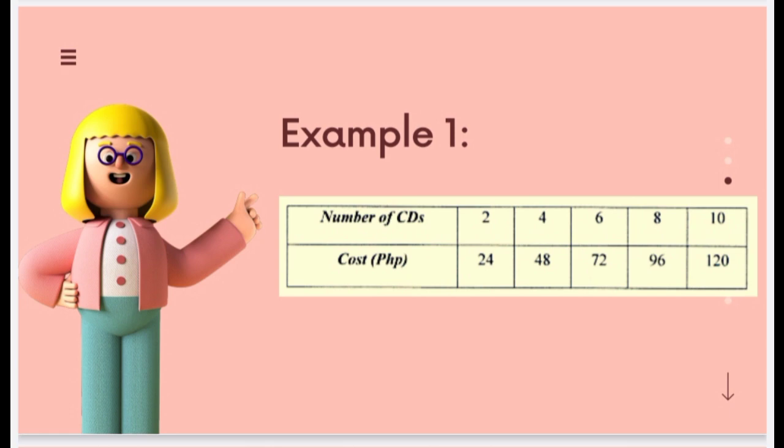In here, we will see the number of CDs: 2, 4, 6, 8, 10, and the cost: 24, 48, 72, 96, and 120. Notice that the values under the cost are dependent on the number of CDs. The more CDs you buy, the bigger money it will cost you.